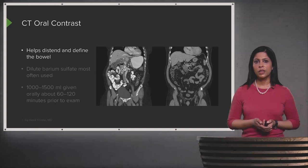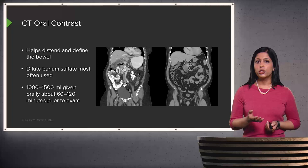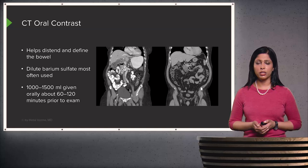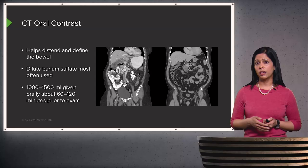Oral contrast is another way of performing a CT and helps to define the bowel. Most commonly, dilute barium sulfate is used — the patient drinks approximately 1,000 to 1,500 milliliters of this solution orally, given about 60 to 120 minutes prior to the examination. This allows the oral solution to travel down into the small and large bowel before the exam is performed.